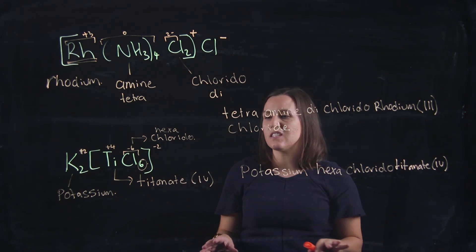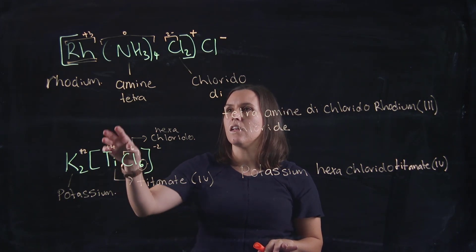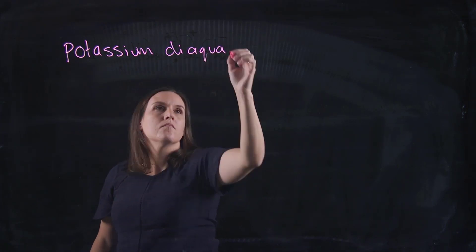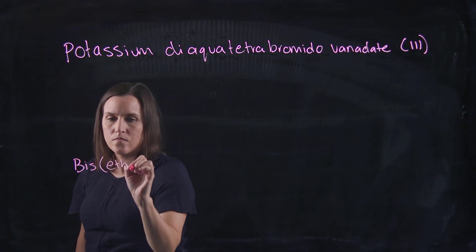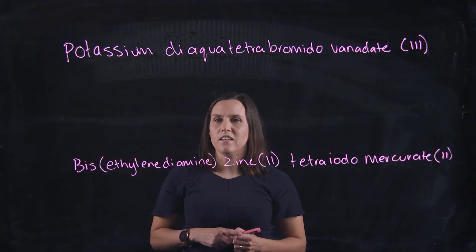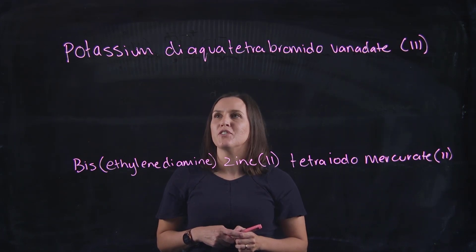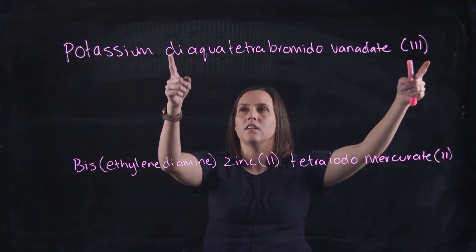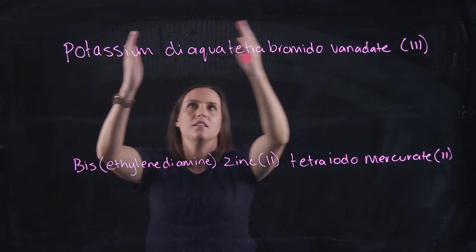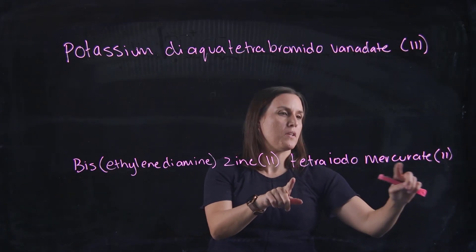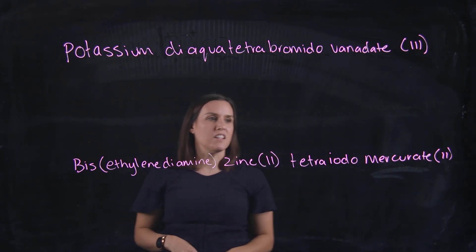The key challenge with these questions is remembering the names for the metals and the ligands. Now let's go from the name into the formula. These are really fun to solve. In one example the metal is the cation, in another it's the anion.